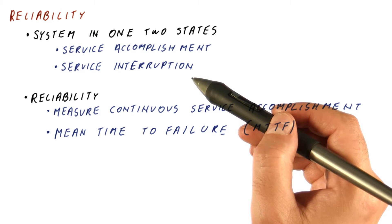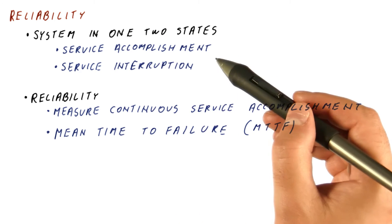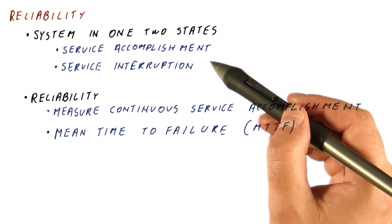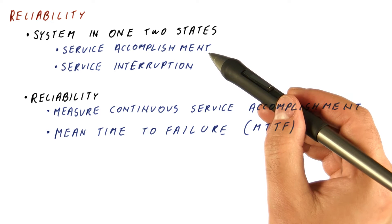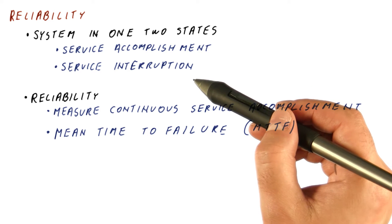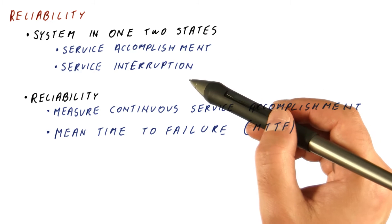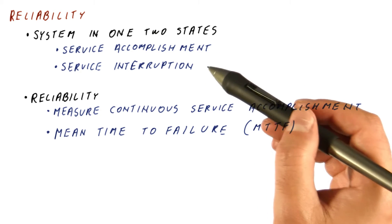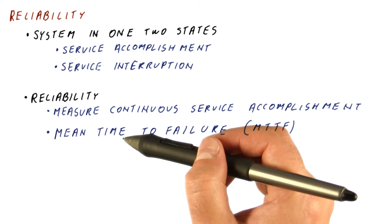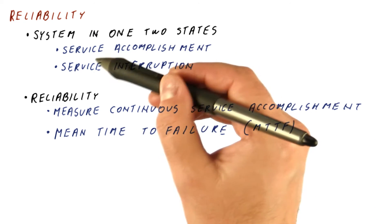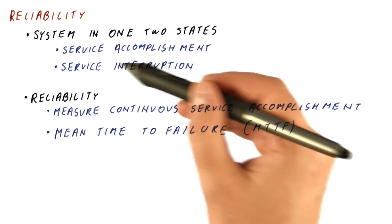So it's not enough, for example, that over the past two years the system has been in service accomplishment for one year. If we have a system that accomplishes service for a month, then is interrupted for a month, then accomplishes service again because it's been fixed, then it's again interrupted for a month — in that case, the mean time to failure will be one month. That's how long you have of continuous service accomplishment, on average, between periods of service interruption.